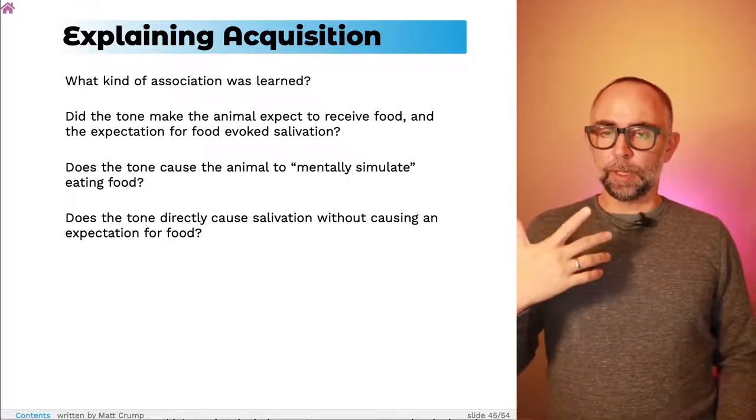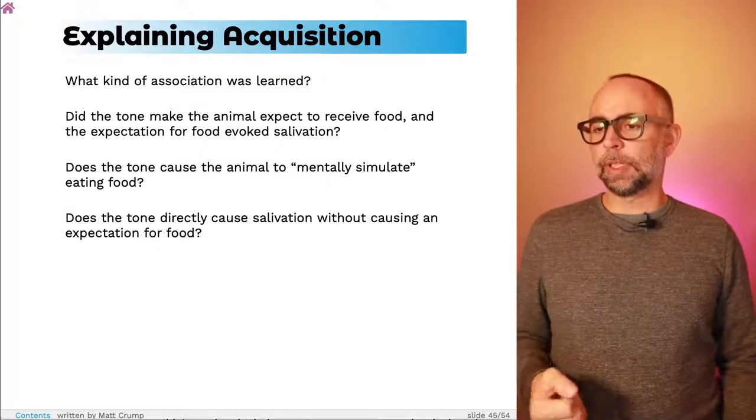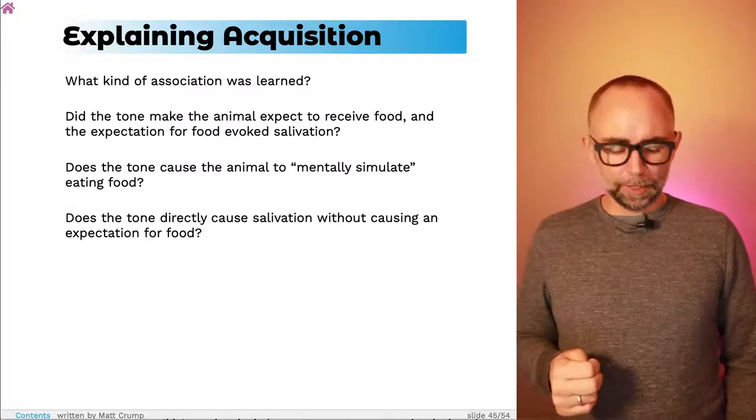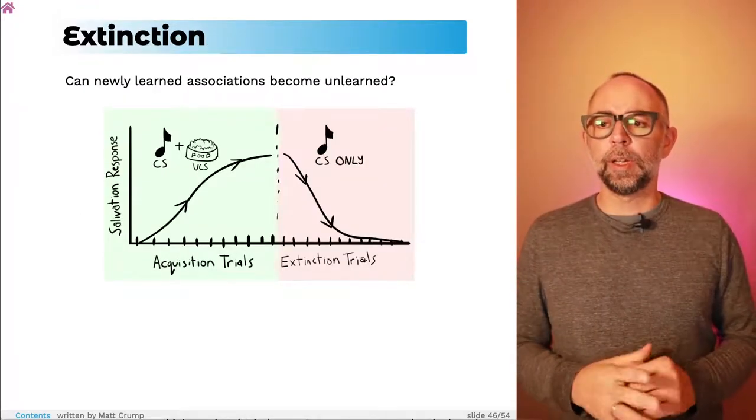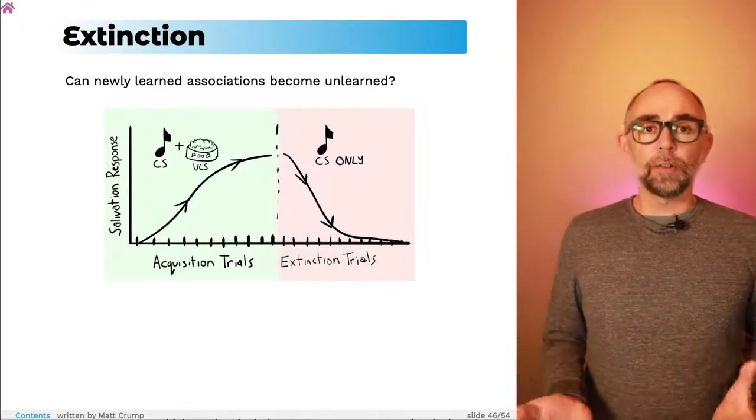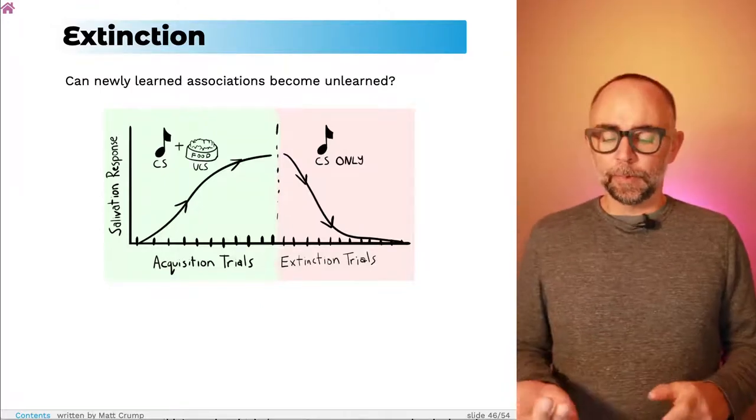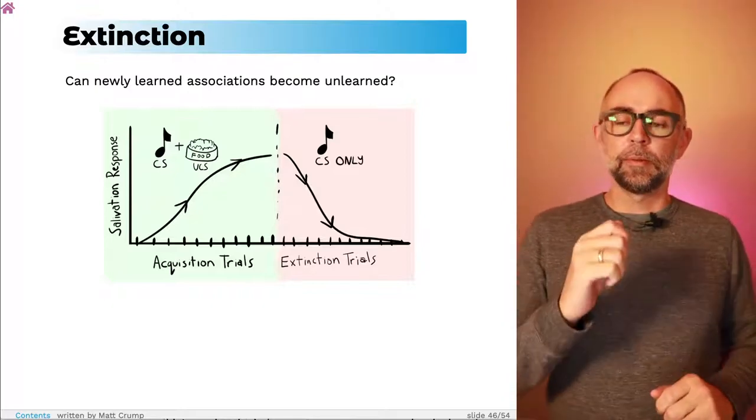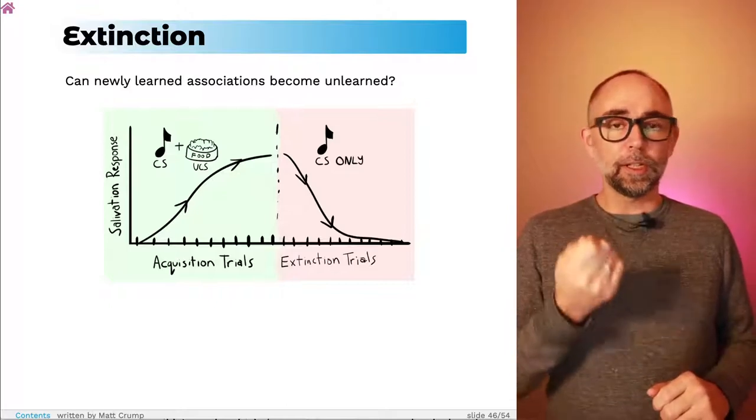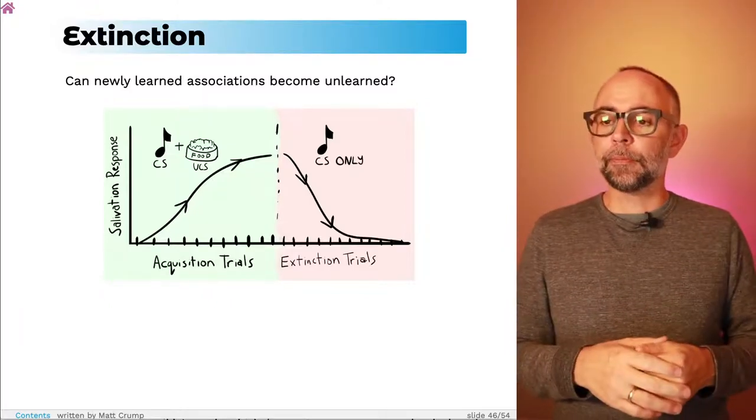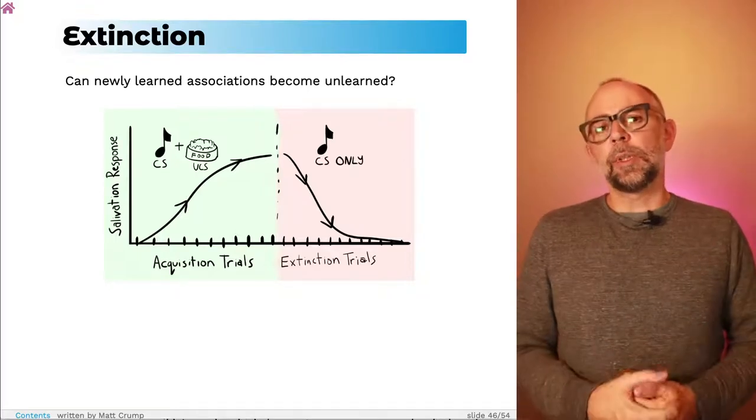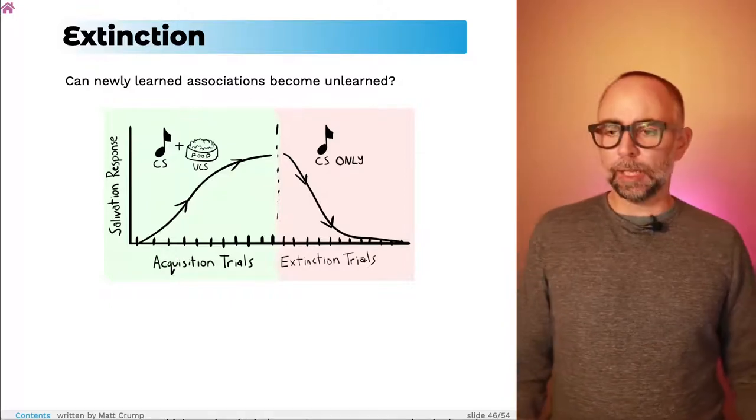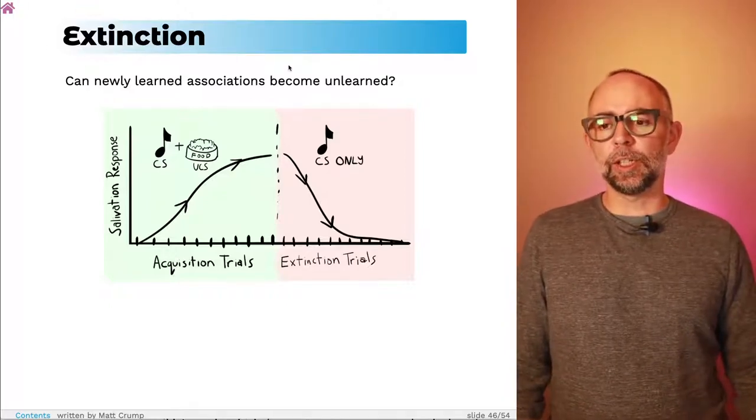Now we're not going to answer these questions today, but I want to connect the questions to the procedure. So I'm going to tell you about a second procedure that Pavlov figured out, and it's called extinction. It's related to another question we might have. Clearly we can make new associations between something like a neutral stimuli, like a tone, and a food reward. Once a new association has been established, can we unlearn it? That's the question that's being asked in an extinction procedure.